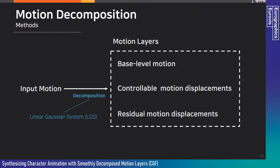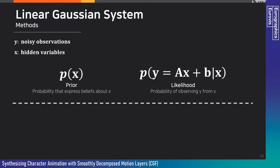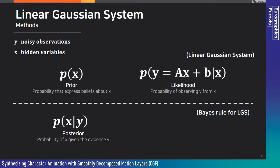We extend the linear Gaussian system (LGS) with a focus on estimating smoothly decomposed motion layers in a non-parametric manner. In LGS, we have a hidden variable x and noisy observation y, with prior and likelihood both following Gaussian distributions. The prior describes beliefs about hidden variables x, and the likelihood describes the probability of observing y from x. Given the LGS, we can solve the posterior using Bayes' rule, meaning we can generate x from y.